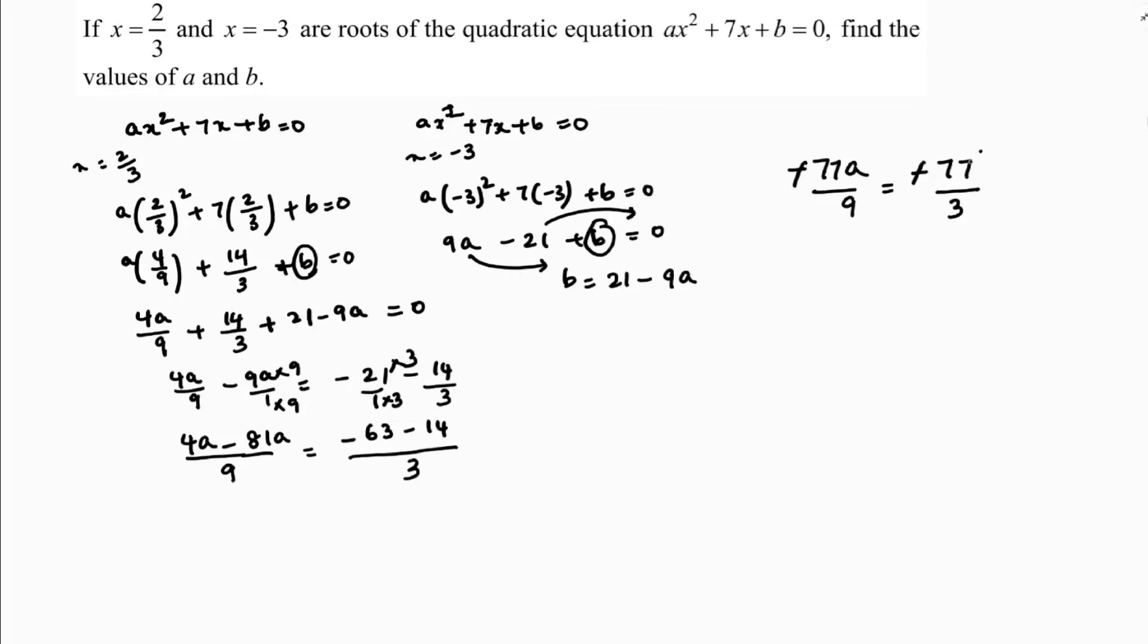So, minus and minus will get cancelled, 77, 77 also. So, you are left with a by 9 is 1 by 3. So, 9 if you will transpose, a equals 1 by 3 times 9. So, a value is 3. The value of a is 3.